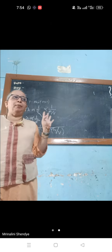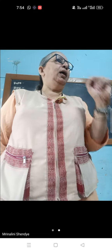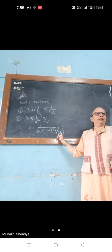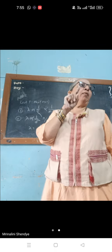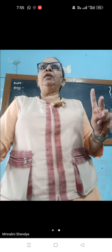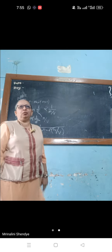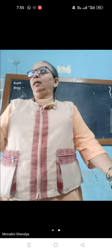We have studied the formula PV equals NRT, where N equals capital N upon N-A. That one formula you have to use, and the other formula for lambda. So this numeric you have to solve in two steps: with PV equals NRT, get the value of N by V, and then solve for lambda.